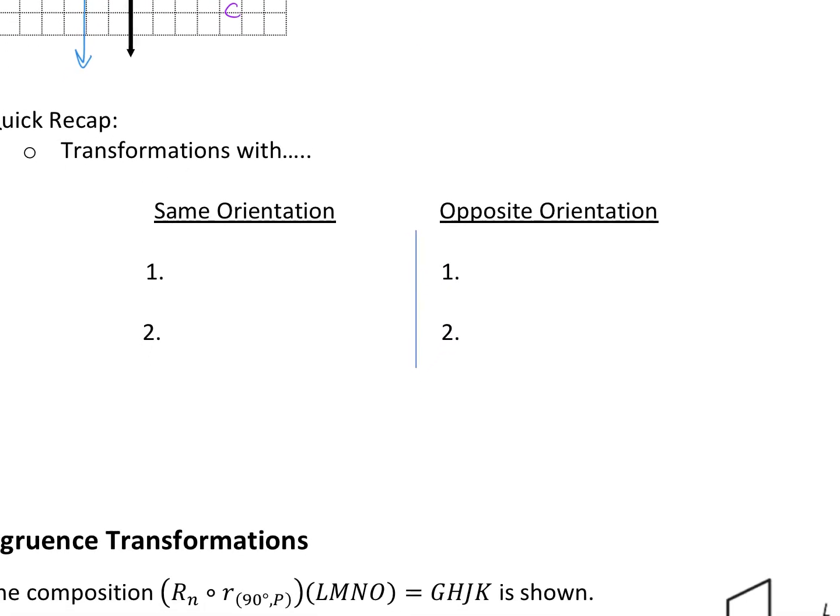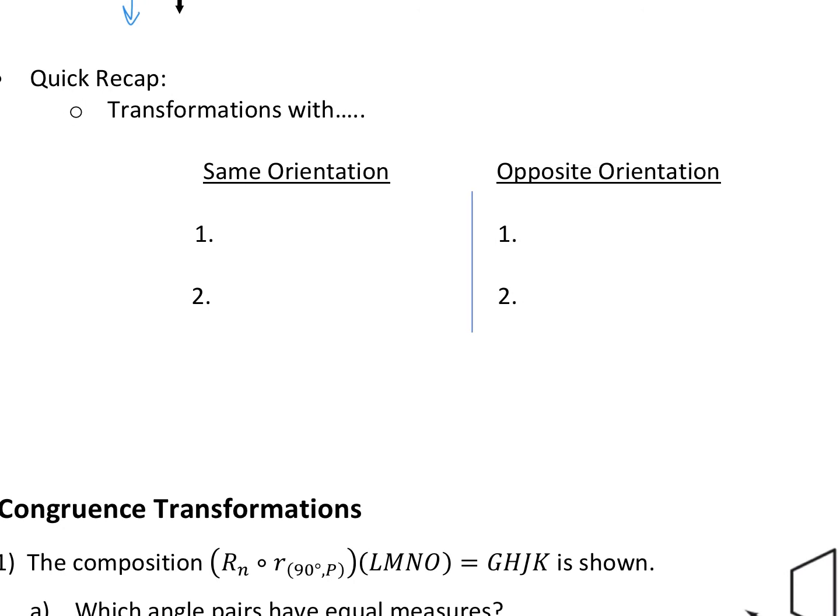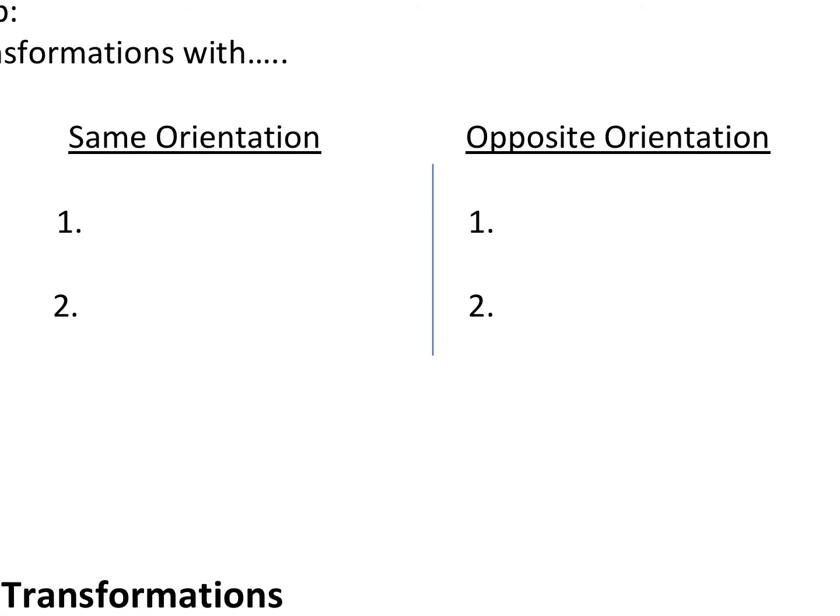So here's your quick recap. Tell me which transformations that we've done. We've done four, right? We started with a translation, then a reflection, then a rotation, now a glide reflection. So those are the four types of transformations we've done so far. Which of those have same orientation and which have opposite orientation? Give me a same orientation. A translation has the same orientation. It does not change direction when you're naming it. What's an opposite orientation one? A reflection. What's the other opposite orientation one? A glide reflection. Basically, anything that has a reflection in it, as long as it's not a reflection followed by a reflection, because that would bring it back to its original, that has opposite orientation. So what's the other one that has same orientation? A rotation.